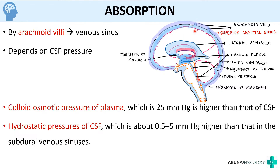The absorption of CSF by the arachnoid villi depends on CSF pressure. CSF flows out through the arachnoid villi because the colloidal osmotic pressure of plasma is 25 mmHg higher than that of CSF, favoring absorption. Additionally, the hydrostatic pressure of CSF is higher, providing a push. So Starling's forces are at play here — the colloid osmotic pressure pulls and the hydrostatic pressure of CSF pushes, driving absorption.